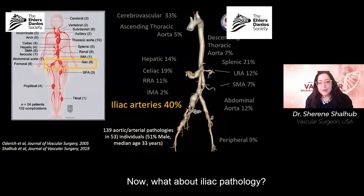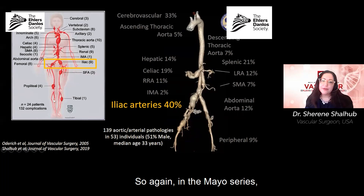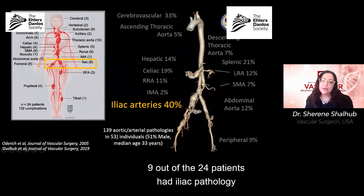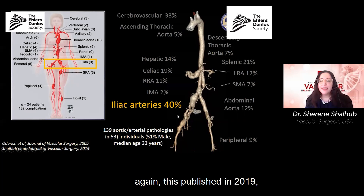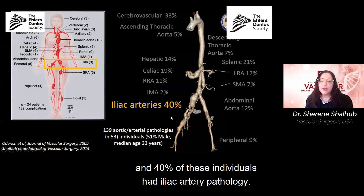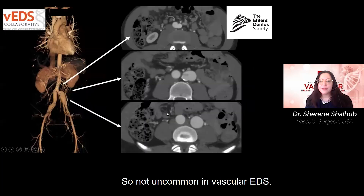What about iliac pathology? It is actually quite common. In the Mayo series, nine out of 24 patients had iliac pathology. In our more recent series published in 2019, 40% of individuals had iliac artery pathology — so not uncommon in vascular EDS.